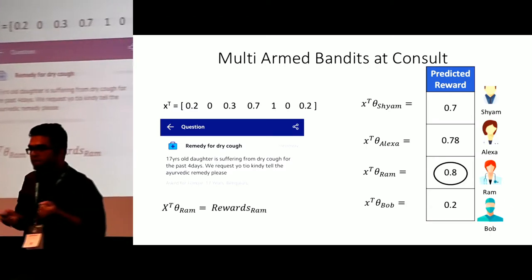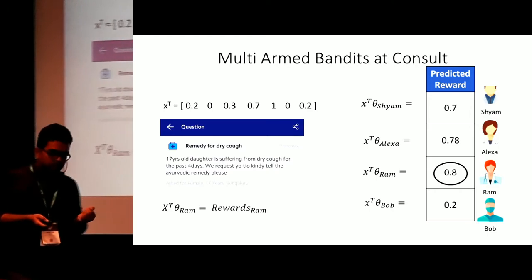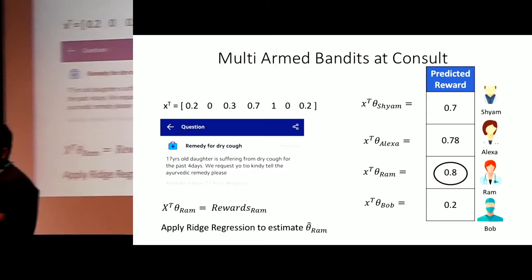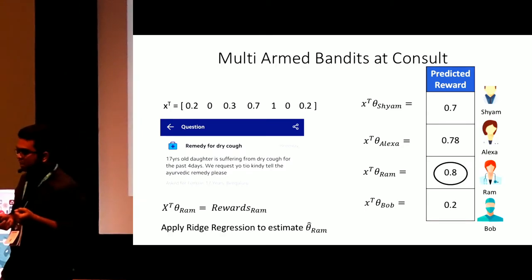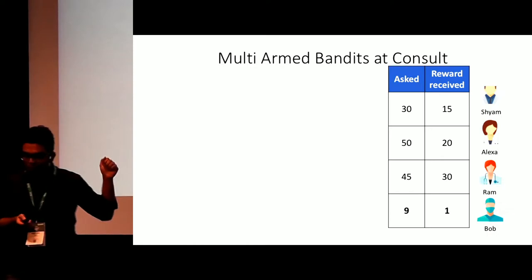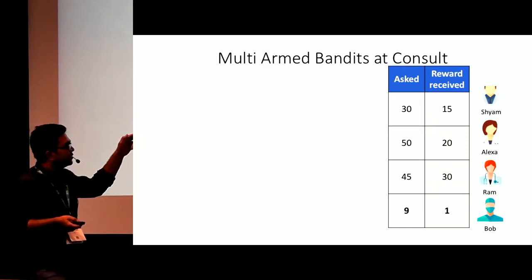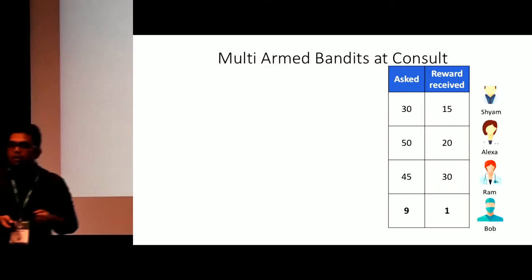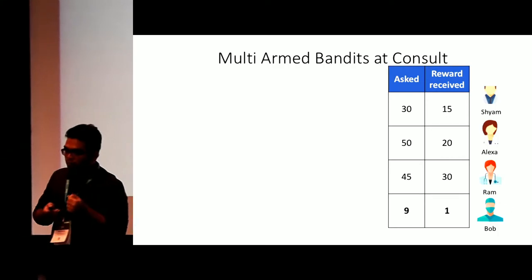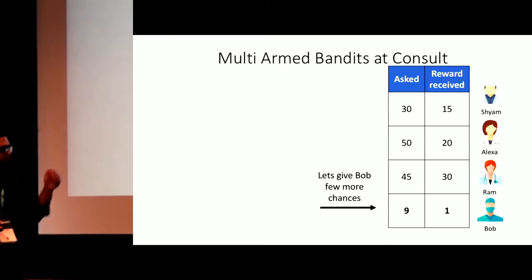The important question is: how do you estimate the parameter vectors? We look at the previous assignments made to each doctor and the true rewards we received. We then apply simple ridge regression to estimate the parameter vectors. After making assignments over a period of time, we observed that Bob has received very few assignments compared to others — Shyam got 30, Alexa 50, Ram 45, and Bob only 9 — because he was not answering many of them. But this doesn't mean Bob won't answer questions at all; he was just busy for the week, so we should give him more chances.